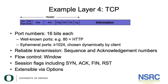TCP also provides flow control, handled by the window mechanism. The window specifies how much data the other side is allowed to send before the receiver's buffer gets full. The transmitter will stop until the receiver has consumed some data from the buffer, allowing the receiver to control the flow. There are flags that control the session: SYN and ACK are used in setting up a TCP session, and FIN and RESET are used in closing it down. The TCP header is variable length — it's possible to extend the header by enabling options, and this has allowed a number of new features to be added to TCP over time.